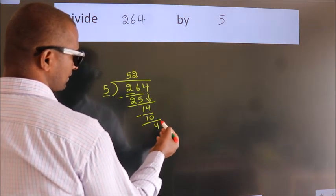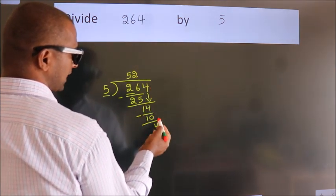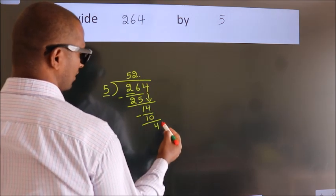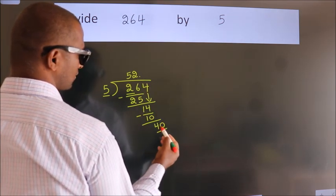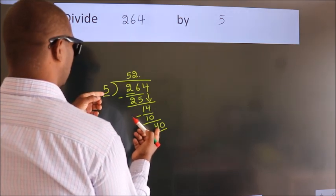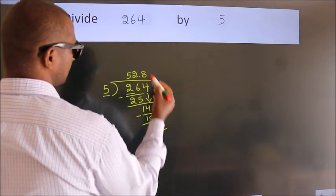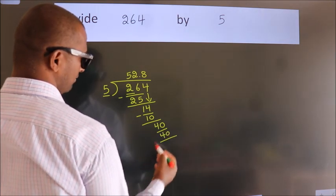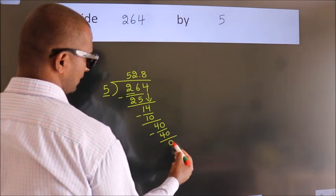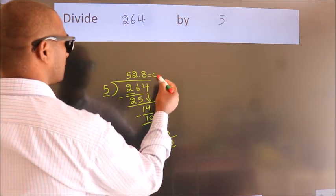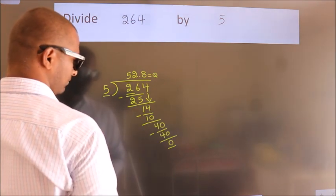After this, no more numbers to bring down. So what we do is, we put a dot and take 0, so 40. When do we get 40 in the 5 table? 5 eights, 40. Now we subtract. We get 0. We got remainder 0. So this is our quotient, 52.8. Thank you.